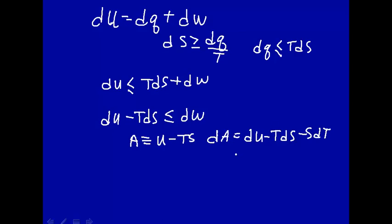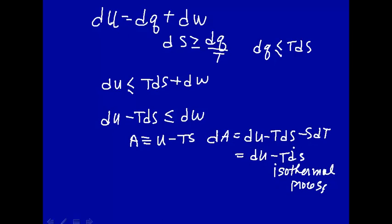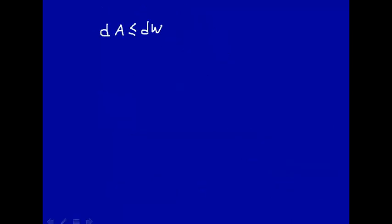Let's make this isothermal, so dA = dU minus T dS for an isothermal process. We can substitute dU minus T dS with dA, so we arrive at dA is less than or equal to dW. This is the change in Helmholtz free energy, and dW is the work done on or by the system.